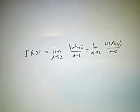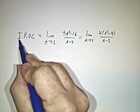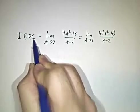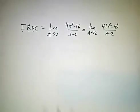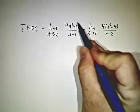So the instantaneous rate of change, IROC stands for instantaneous rate of change. The instantaneous rate of change is the limit as t approaches 2 of the average rate of change.